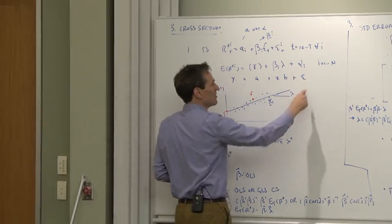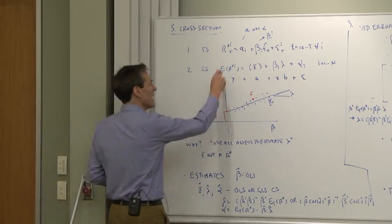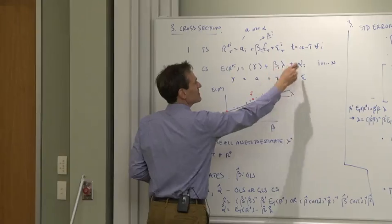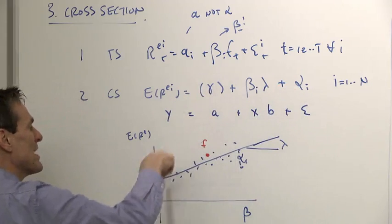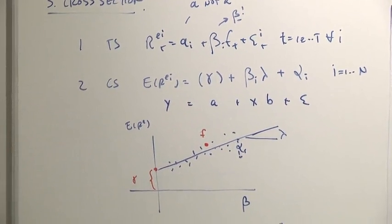And the alphas are the errors of that regression relation. But that is the regression we're running: average returns on betas, alphas are errors. And we can let a free intercept, or we might want to force the intercept to zero.